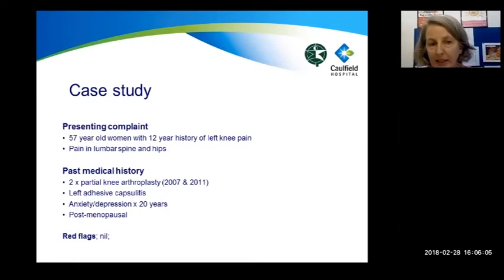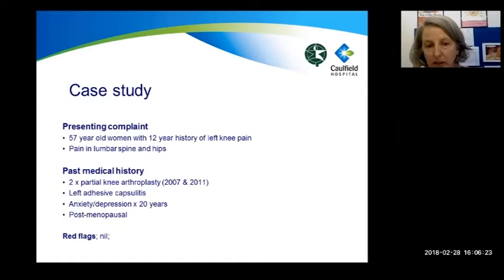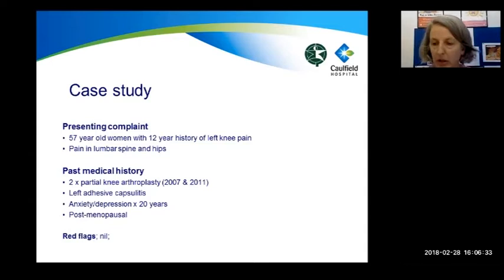Since the onset of knee pain, she has developed pain in her lumbar spine and hips. Her past medical history includes two partial knee arthroplasties, a left shoulder adhesive capsulitis, and a 20-year history of anxiety and depression. She is post-menopausal, there are no red flags, and her general history is unremarkable. Her current medications are Panadol Osteo and an antidepressant. She has been on opioids in the past but not at this point.